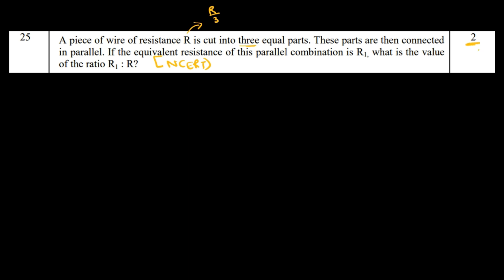Let's solve it. We know that resistance of each part is R/3. The equivalent resistance is 1/R₁ = 3/R + 3/R + 3/R = 9/R. Therefore, R₁/R = 1/9, so the ratio is 1:9. This is how we solve this question.